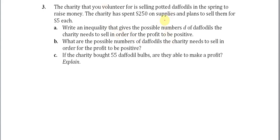When we say supplies, we mean daffodils — this is what they've spent so far, this is the cost. And this is the potential revenue, the money that comes in. Write an inequality that gives the possible number D of daffodils the charity needs to sell in order for the profit to be positive.